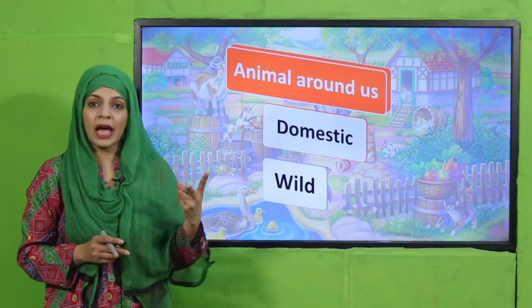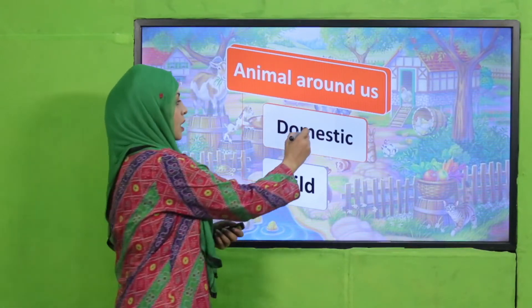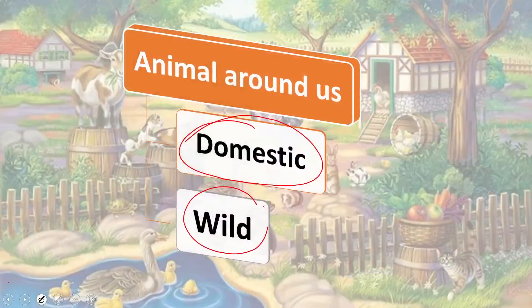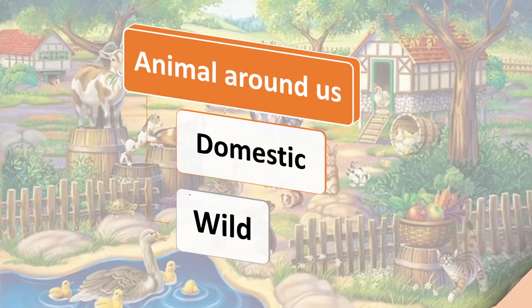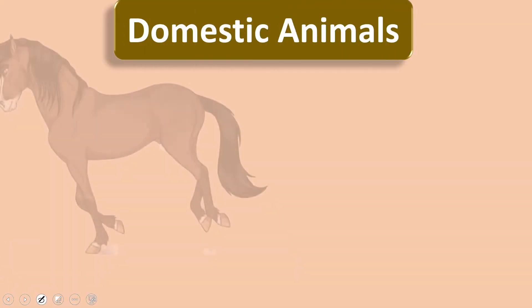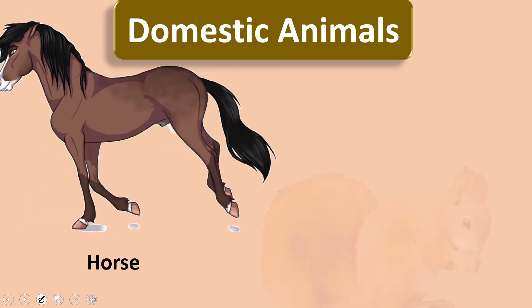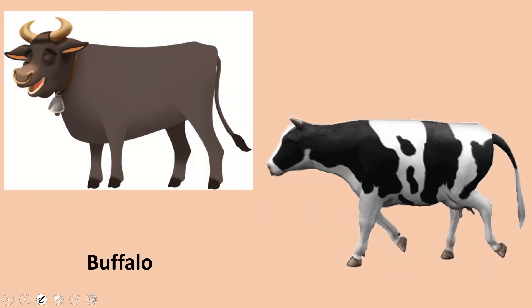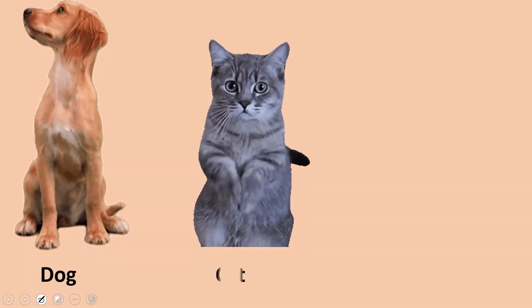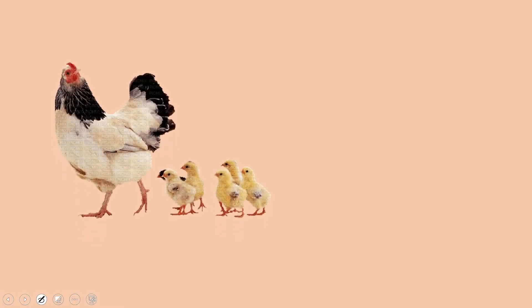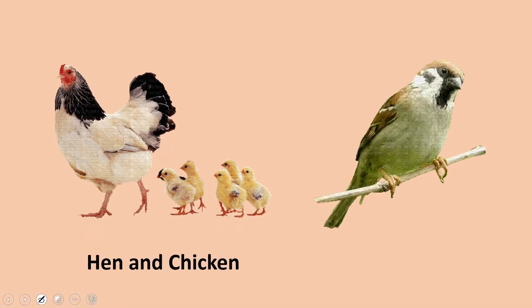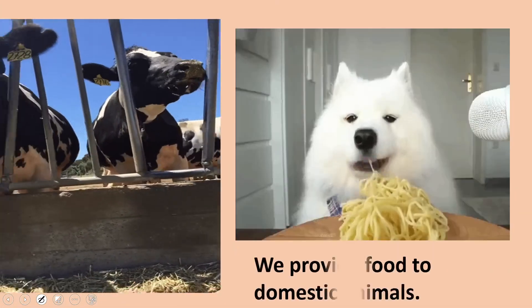Domestic animals include horse, squirrel, cow, buffalo, dog, cat, donkey, chicken, hen, and sparrow — these all are domestic animals. We provide them with food and they serve us in many ways.